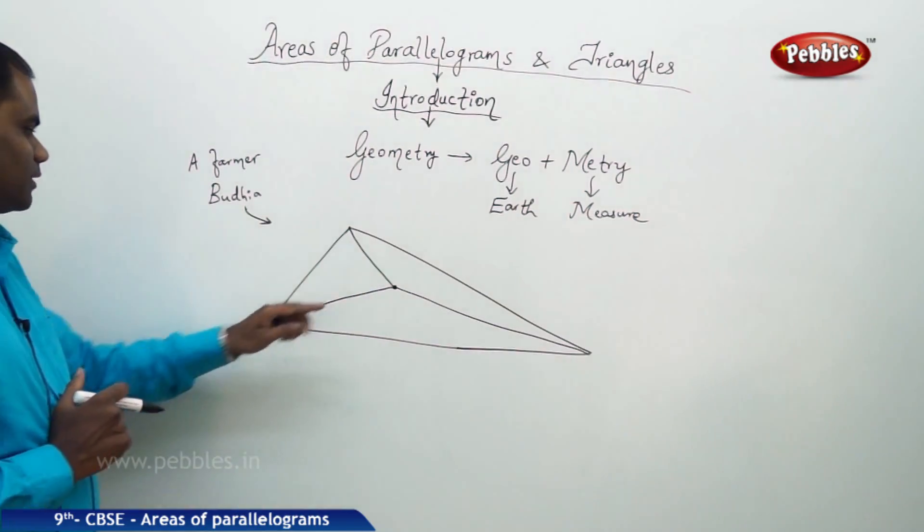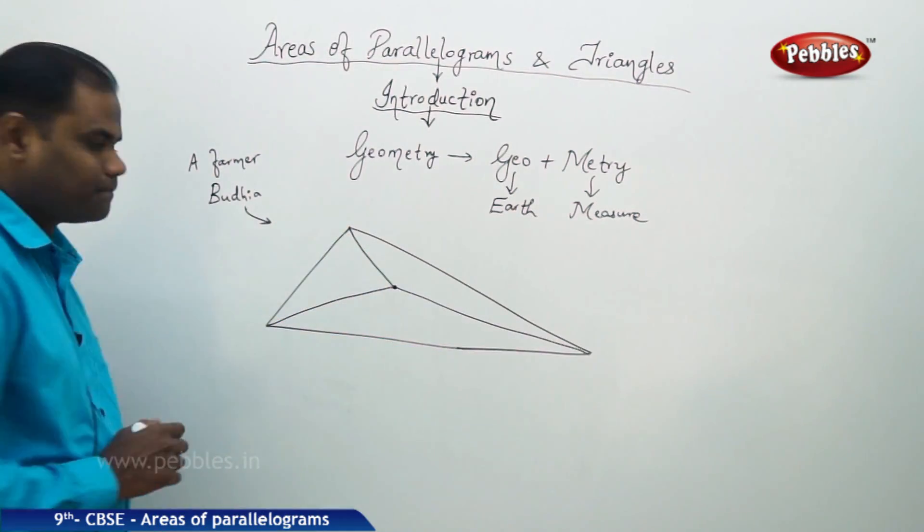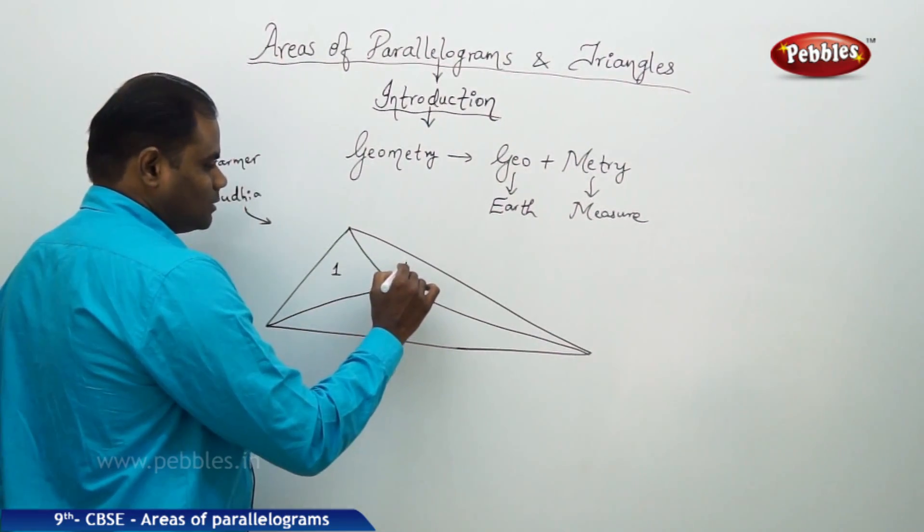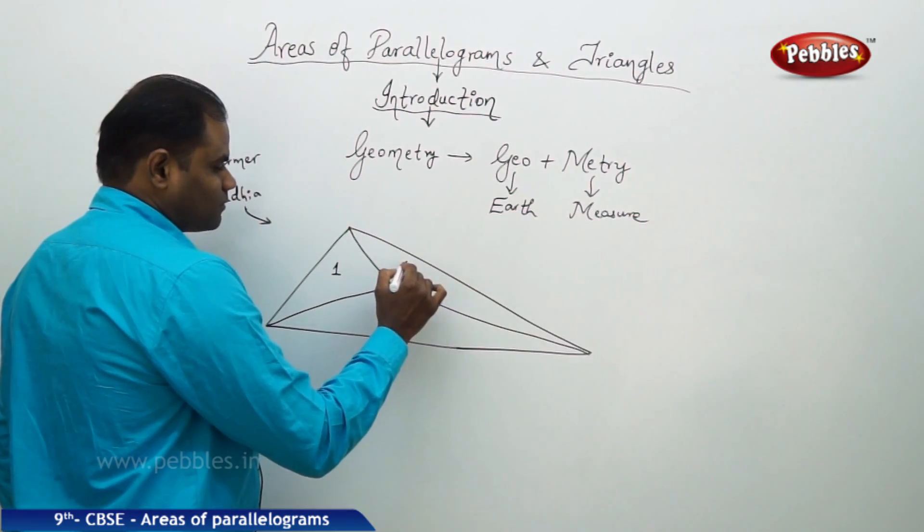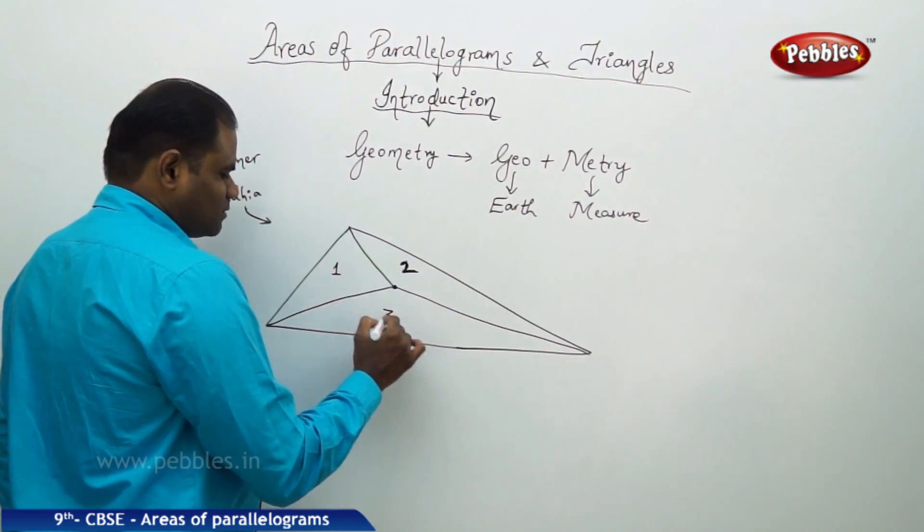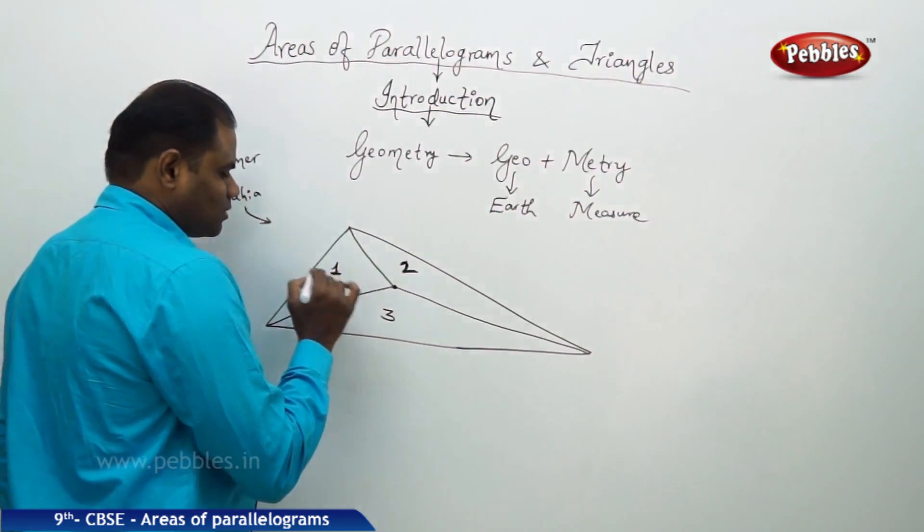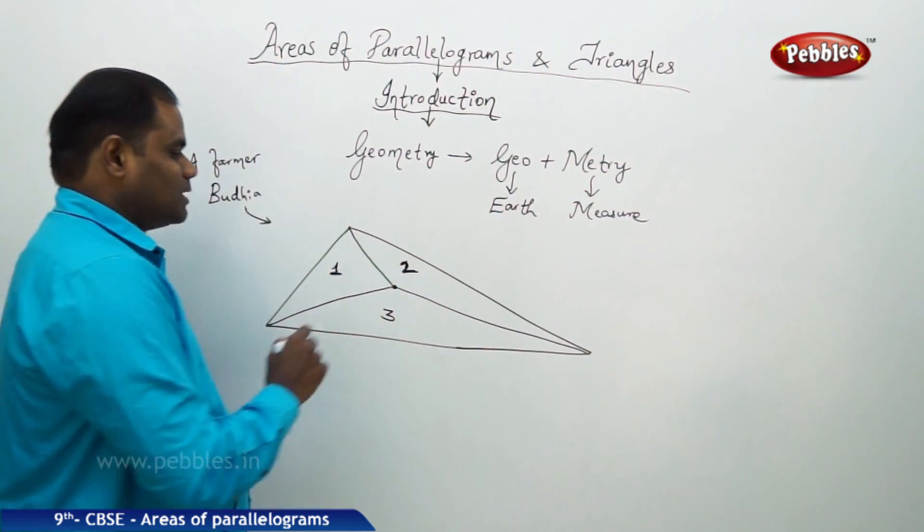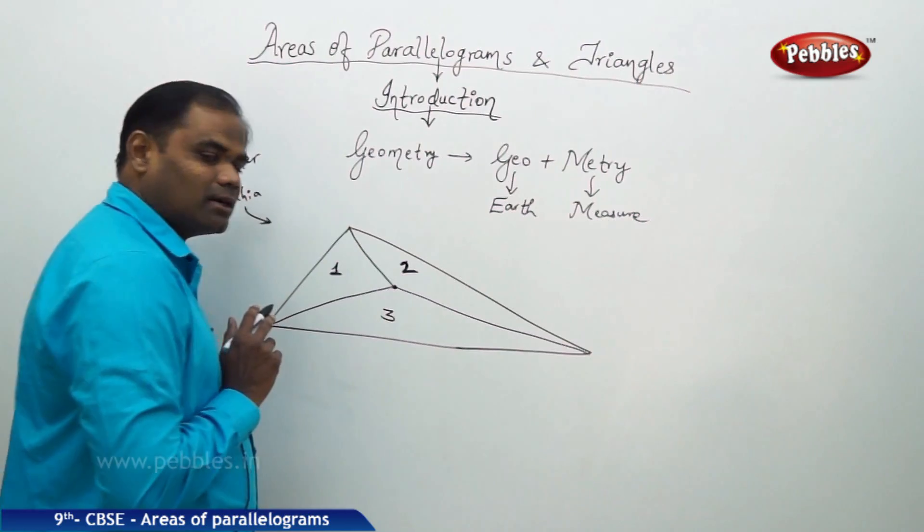Now after cutting his land into three parts in this manner, he wanted to give this first piece to his son, and this piece of land to his daughter who is third in number. Now he assumes that these three areas are equal.